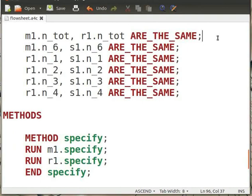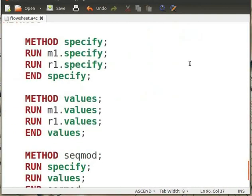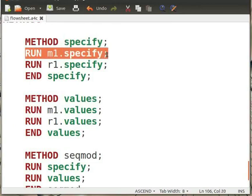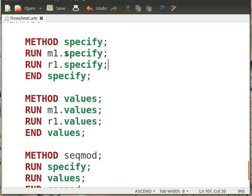Under methods section, we will again write the same methods as specify, values, and sec_mode. Note that under methods specify and values, we run methods for each individual component under each method. For example, under method specify, we have written run M1.specify and run R1.specify. This command will execute the specify method for mixer under the method specify for flowsheet.